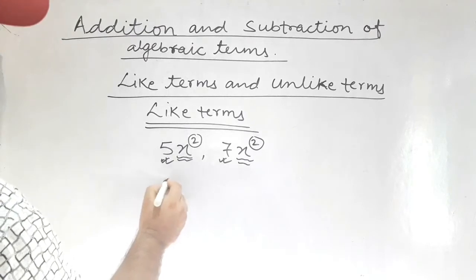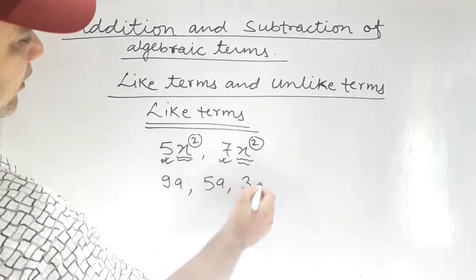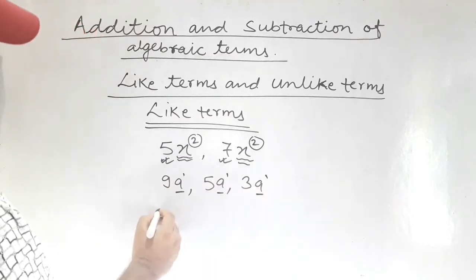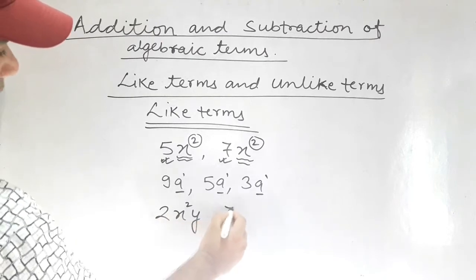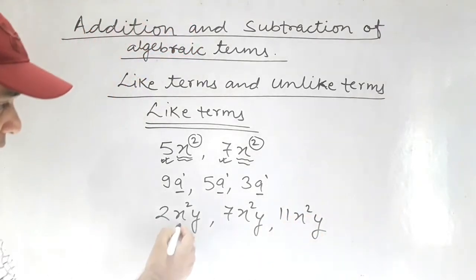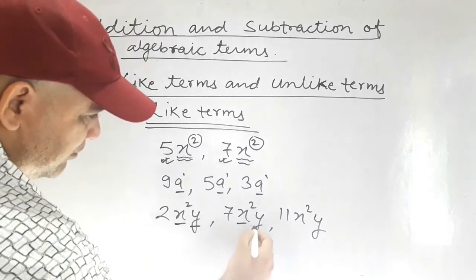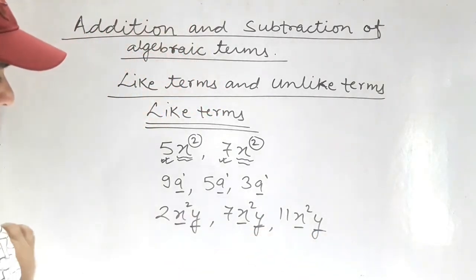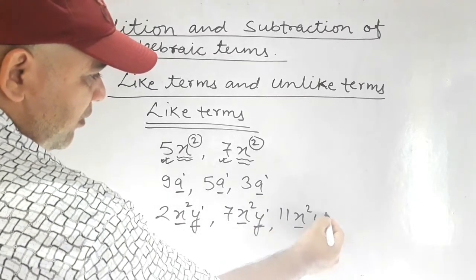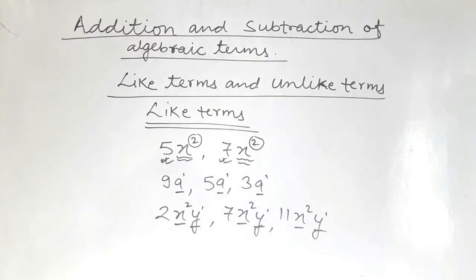Another example: 9a, 5a, 3a. Here the base is a and the power is 1. Another example: 2x squared y, 7x squared y, 11x squared y. The base x has power 2, and the base y has power 1 in all three terms. So they are Like Terms. To recall again: the terms having same base and same powers are called Like Terms, and it is not necessary that the coefficients should also be same.